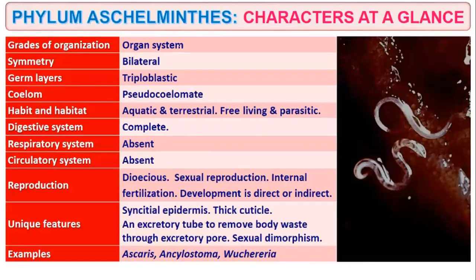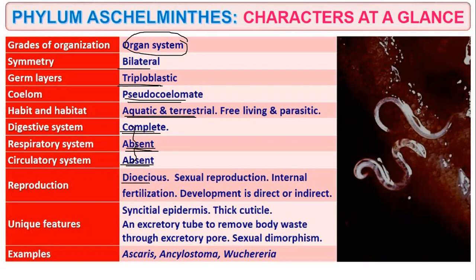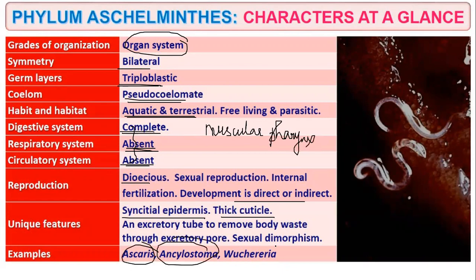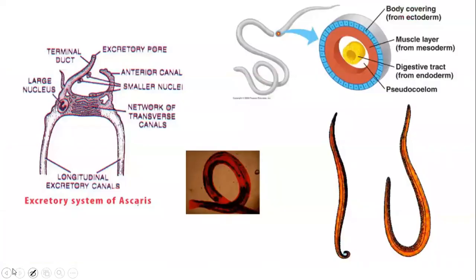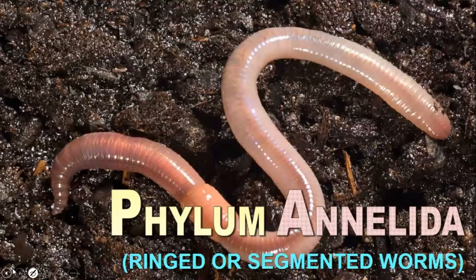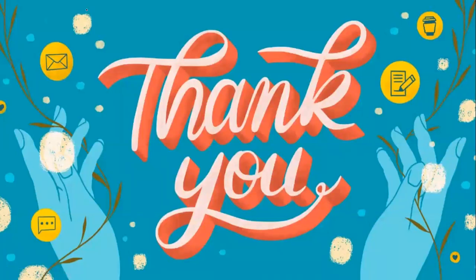Summary of Aschelminthus features: organ system level of organization, bilateral symmetry, triploblastic, pseudo-coelomate, aquatic and terrestrial, complete digestive system, respiratory and circulatory systems absent, dioecious with direct or indirect development, syncytial epidermis, thick cuticle, well-developed muscular pharynx. Examples: Ascaris, Ancylostoma, Wuchereria. That's all for today's class. In the next class we will continue with Phylum Annelida — the earthworm, segmented or ringed worm. Bye-bye!